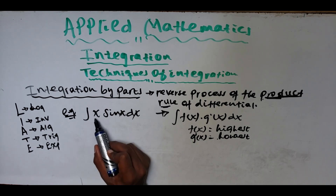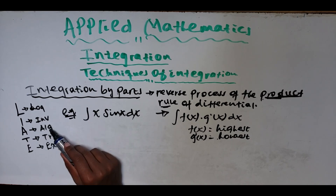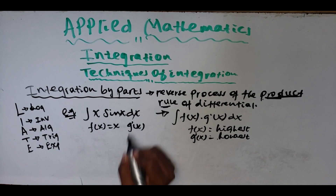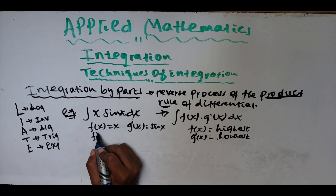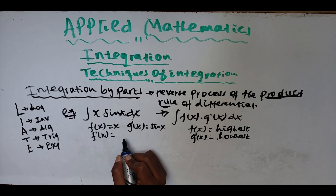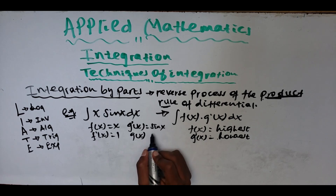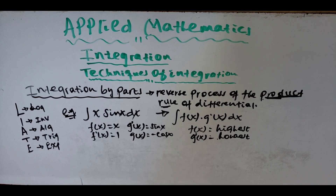So f(x) = x and g'(x) = sin(x). The derivative of f(x) is f'(x) = 1. For g(x), we integrate g'(x) = sin(x), which gives g(x) = −cos(x). Now we have the formula for integration by parts: f(x)g(x) minus the integral of f'(x)g(x) dx.